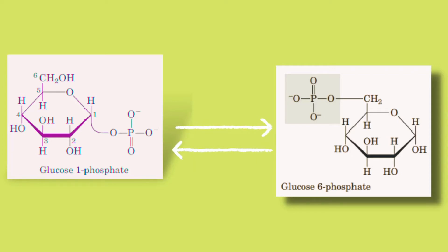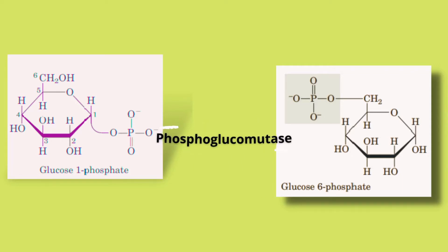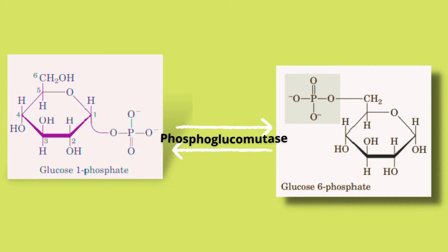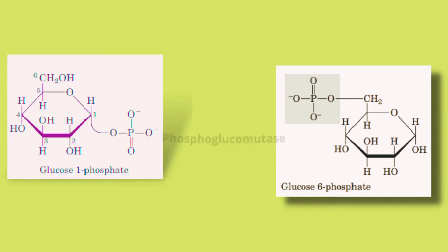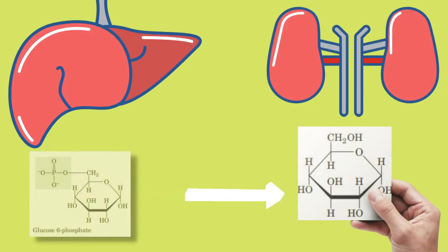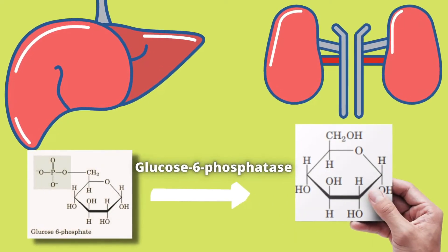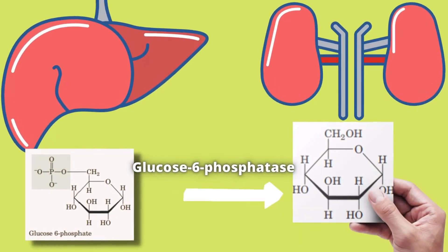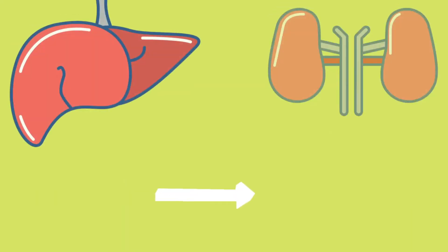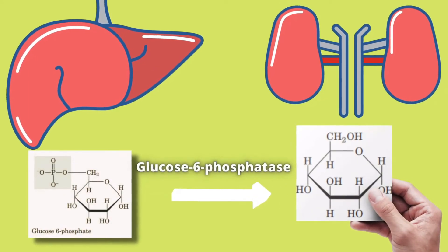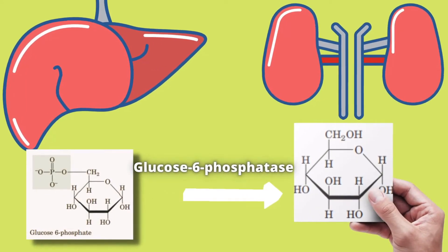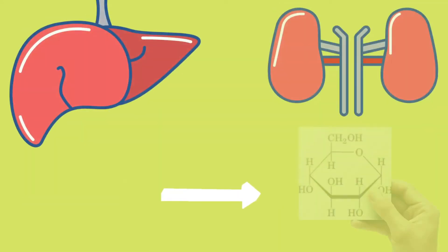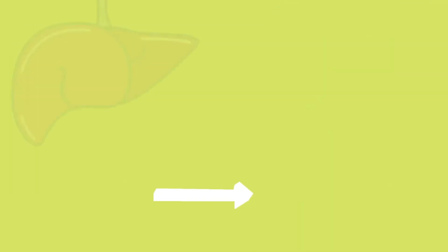The glucose-6-phosphate formed from glycogen in the skeletal muscle can then enter glycolysis and serve as an energy source to support muscle contraction. In the liver, however, glycogen breakdown releases glucose into the blood to increase the blood glucose level when you have not been eating for a longer period of time.